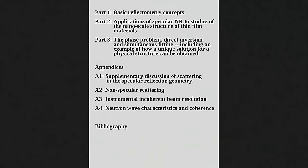To use this specialized diffraction technique, you need to prepare samples that are appropriate for this kind of measurement. In this first discussion this morning, I've divided it into three parts. First, some basic ideas and concepts involved in reflection, because it is a little different from doing X-ray or neutron diffraction at higher momentum transfers. Second, we'll look at applications of specular neutron reflectometry to different types of films — mostly soft condensed matter. There are also many applications for neutron reflectometry from magnetic thin films, but we'll cover that in the second talk.